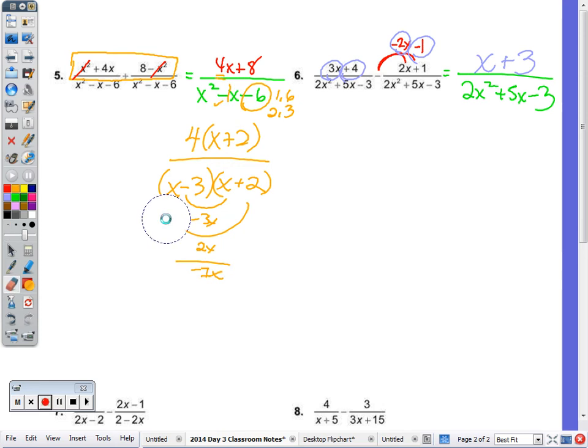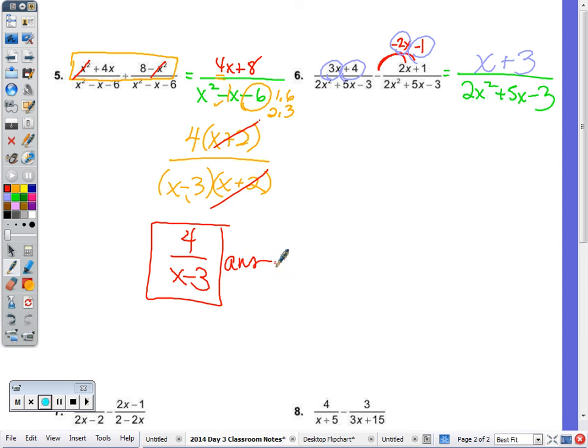Now I go ahead and cancel, and we're left with 4 over x minus 3. I forgot the restrictions, and to do the restrictions, we need to go back to the original fraction, which is here, and the factors are here. So the restrictions are 3 and negative 2.